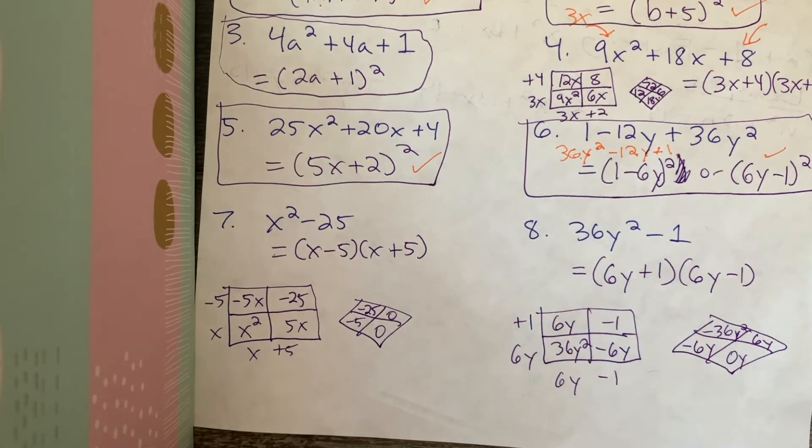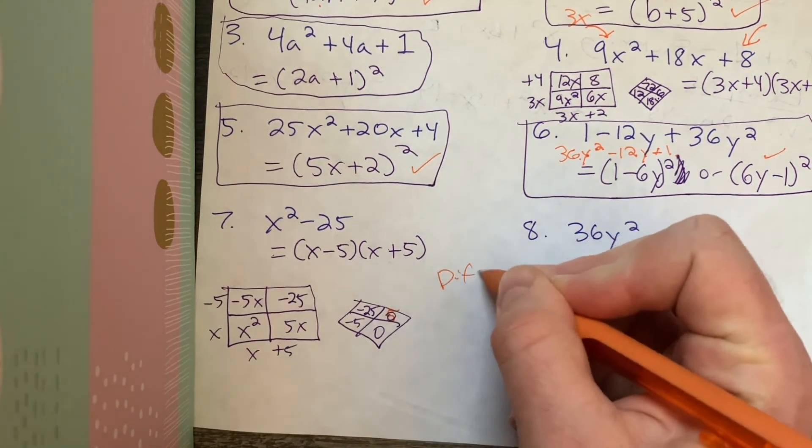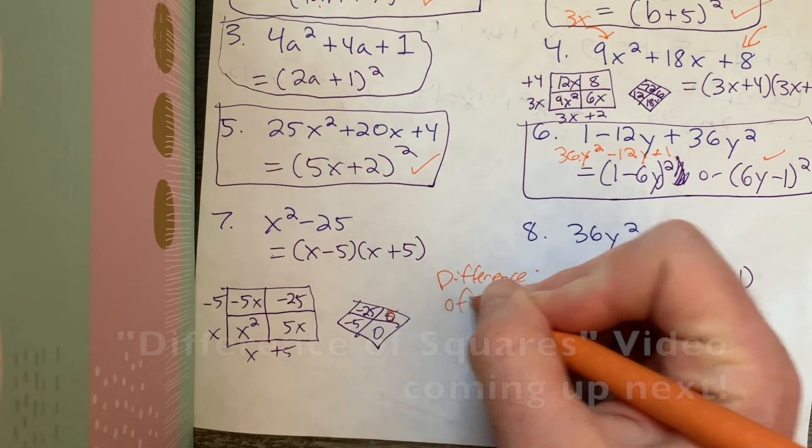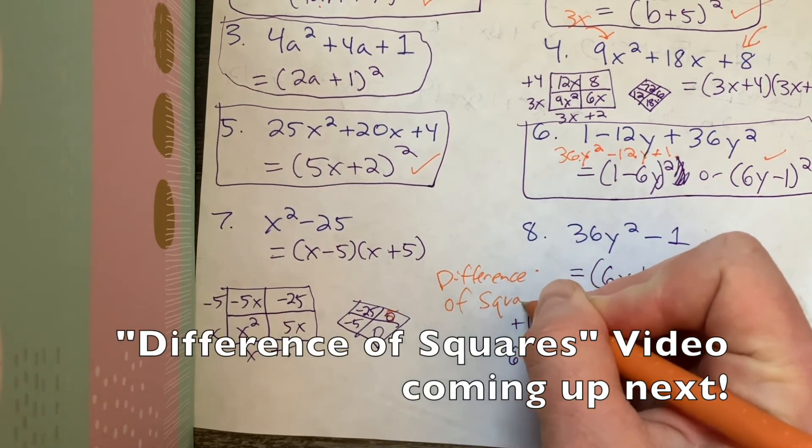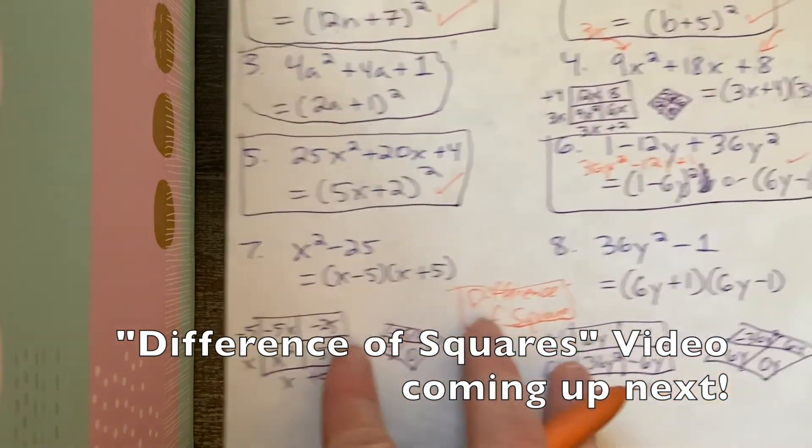And then in video number 3, coming up next, we're going to be talking about these and how to factor them. And what you need to keep in mind and how you can use another shortcut. And we're going to talk about why these are special right here. These are called difference of squares is the special type that we have down here.